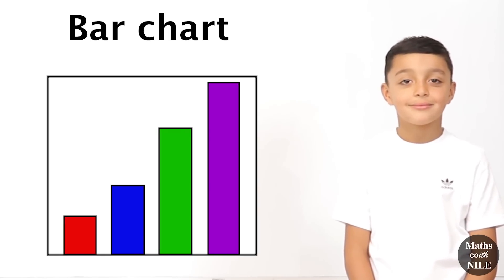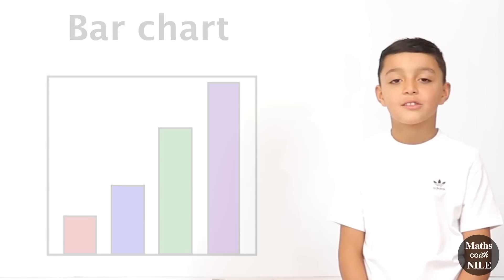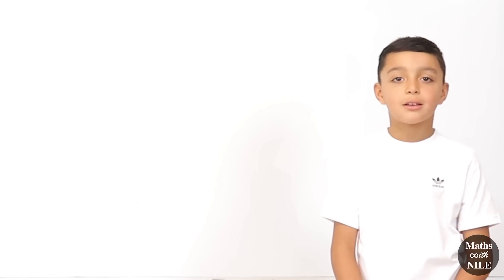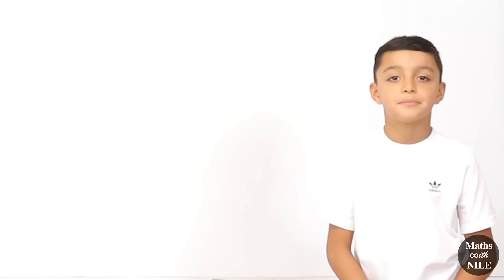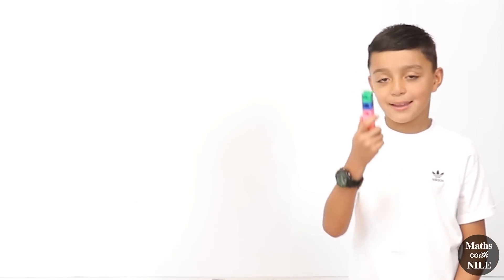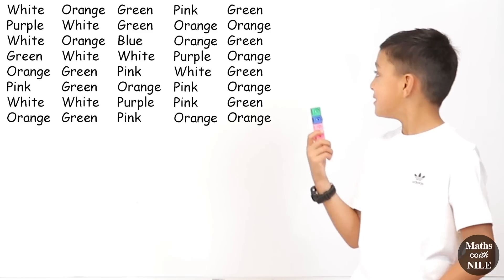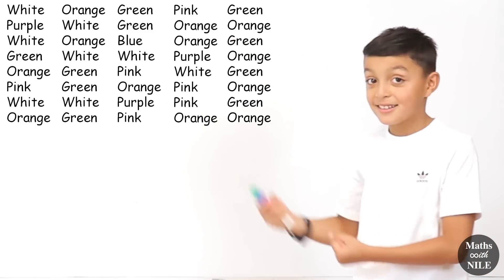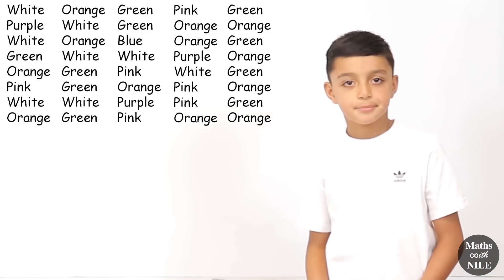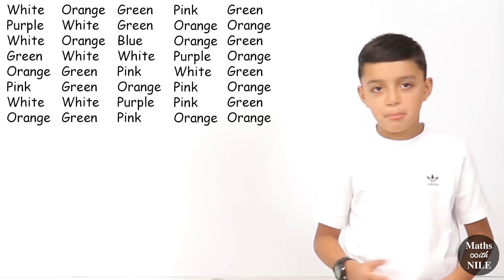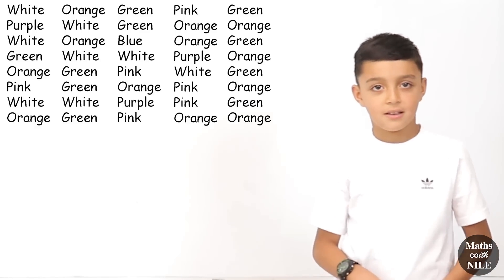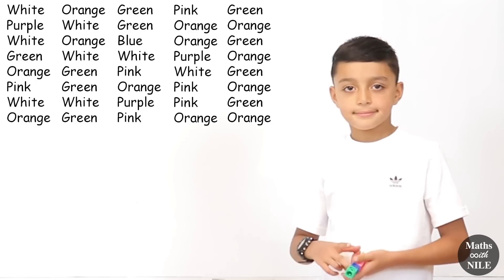Hi Niall, what information will we be using to draw a bar chart today? We will be using the colours of my blocks. So before the lesson you recorded the colours of blocks that you had. Yes. And we can see all the colours there, can't we? Yeah. And can you tell me something about how it looks, the way that you've recorded it? I think it looks very jumbled up and messy. Okay, so what do you think we should do first?